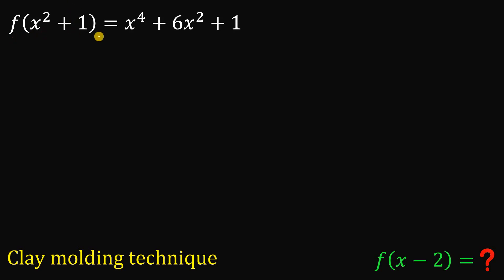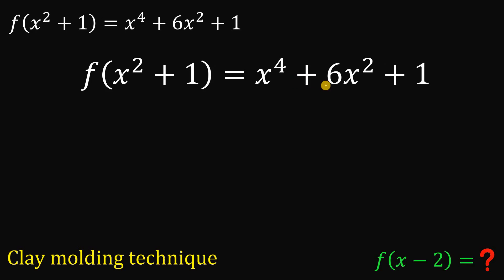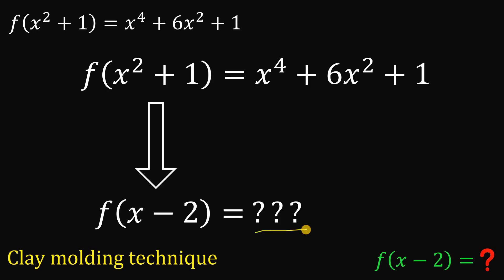So in this question, given f of x squared plus 1 equals x raised to the fourth power plus 6x squared plus 1, the goal is to find the value of f of x minus 2. To answer this using the clay molding technique, we need to mold this function until we reach f of x minus 2. And that's the goal.